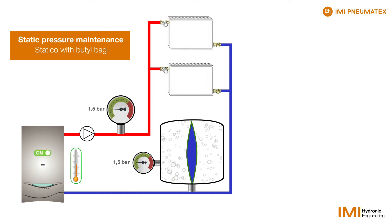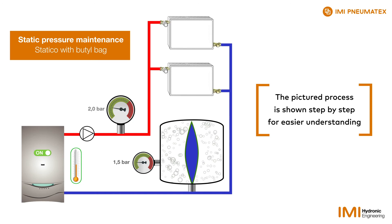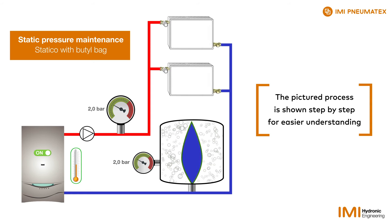Again, when the boiler is switched on, the water heats up and expands, resulting in a pressure increase to 2 bar, for example. Water is forced into the vessel and compresses the gas inside to 2 bar. The butyl bag expands evenly to give space to the incoming water.